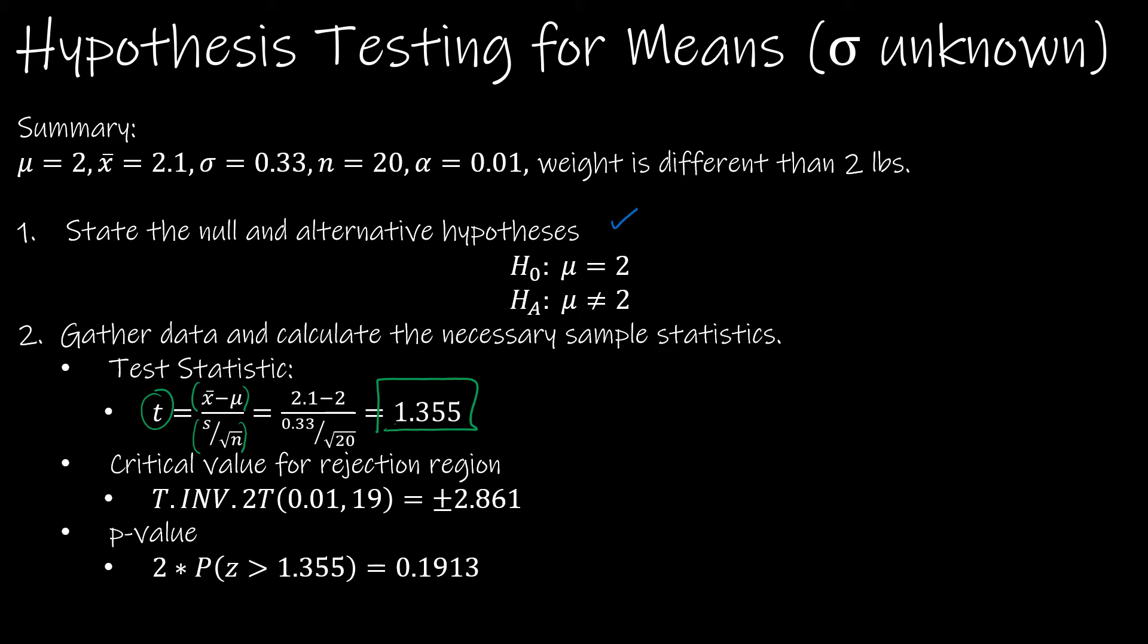We find our critical value for a rejection region. And for a two-tailed test, remember that we can actually use t.inverse.2t.